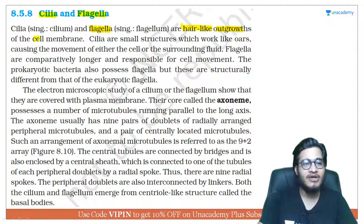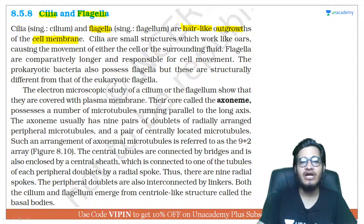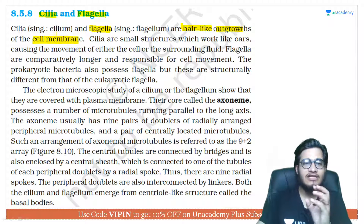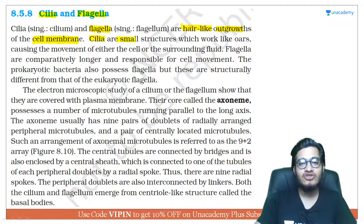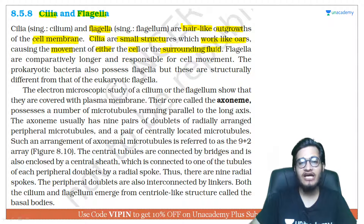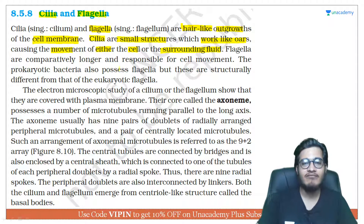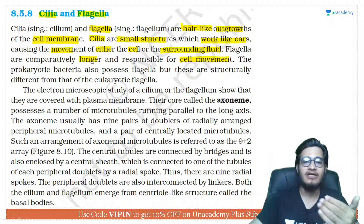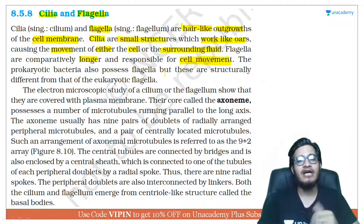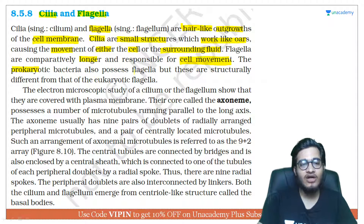When you look at the cell membrane, you will see extrusions emerging from it — these are your cilia and flagella. Prokaryotes that are motile also possess cilia and flagella. Cilia are small structures that work like oars, causing the movement of either the cell or the surrounding fluid. They are numerous, thin, and bristle-like — they either move the cell or move fluid around it. Flagella are comparatively longer and fewer in number, and they cause direct cell movement. A question from NEET 2014 asked what is responsible for cell movement — options were cilia, flagella, pili, and fimbriae. Flagella is the answer.